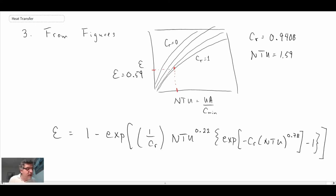You get that big long equation there, but you know everything in it—you know C_R, you know NTU. When you plug the values in, we get the effectiveness is 0.58196, which is in pretty good agreement with what we get off of the chart. I'm just going to take the 0.59 and continue on calculating.